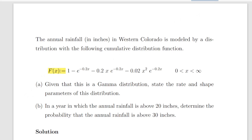Here we have F of x, and that is equal to 1 minus e to the minus 0.2x minus 0.02x squared times e to the minus 0.2x, where x is between 0 and infinity. Watch out for the coefficients there: that's 0.2 and that's 0.02.